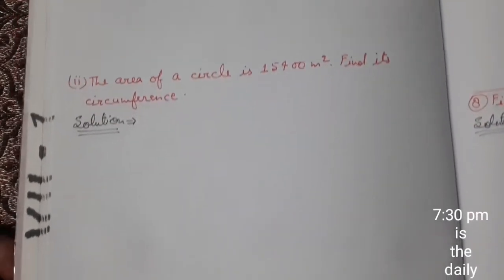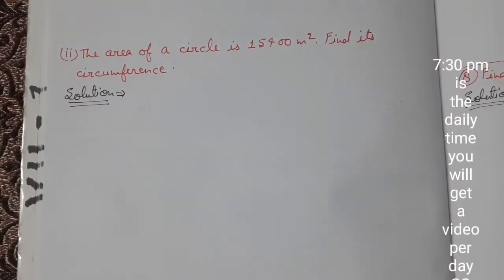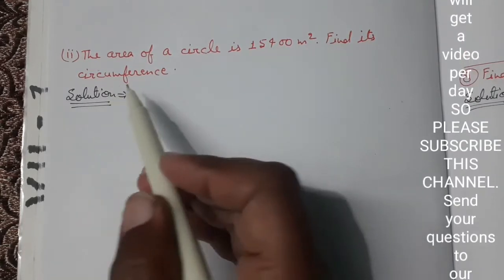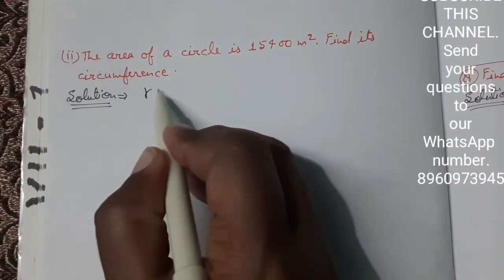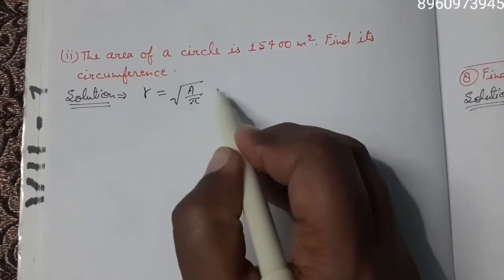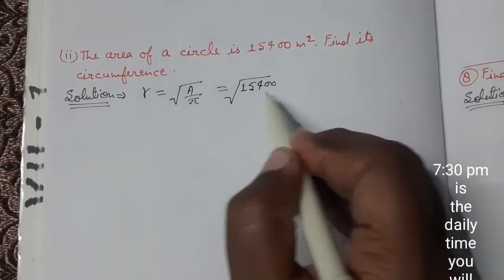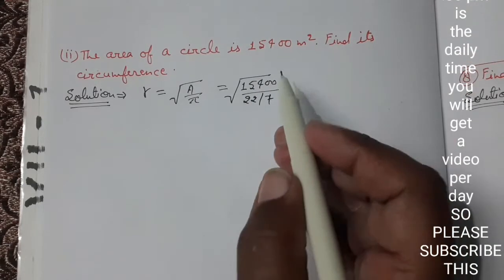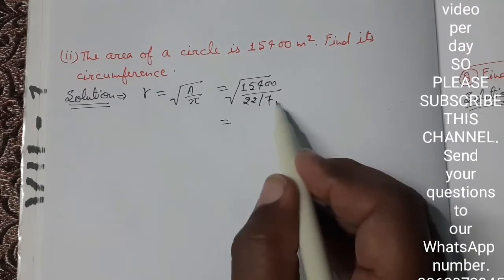Now let's go to the next question, which is question 5 part 2. The area of a circle is 15400 m². Find its circumference. Circumference depends on radius, so with the area we will first find the radius. The radius of a circle equals the square root of area upon π.